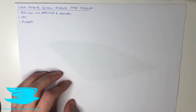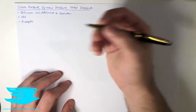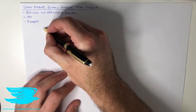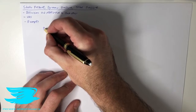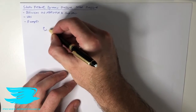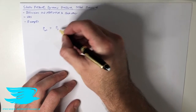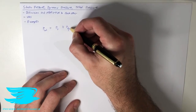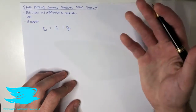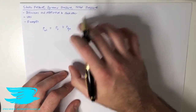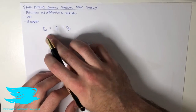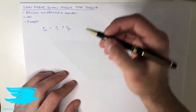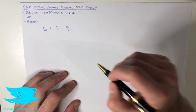So what are they? Well, there's a very simple relationship that defines them. We have P_tot — P total — equals P_s, P static, plus P_din, P dynamic. This is the basic relationship: total pressure equals static pressure plus dynamic pressure. Let's cover each one of these terms in sequence.